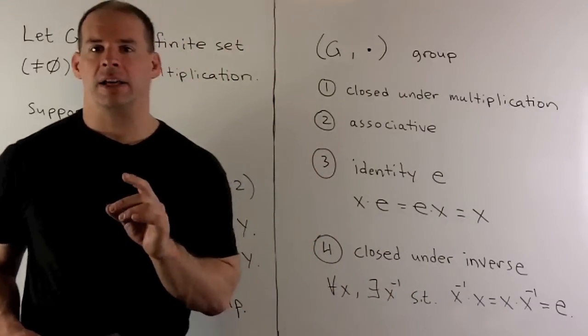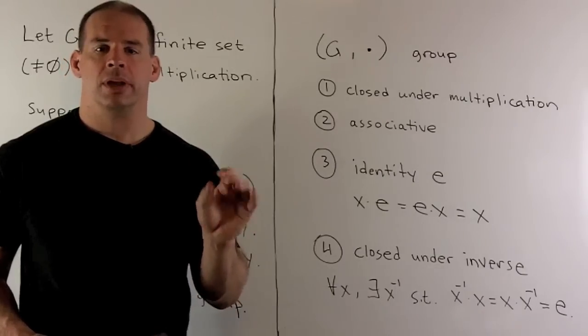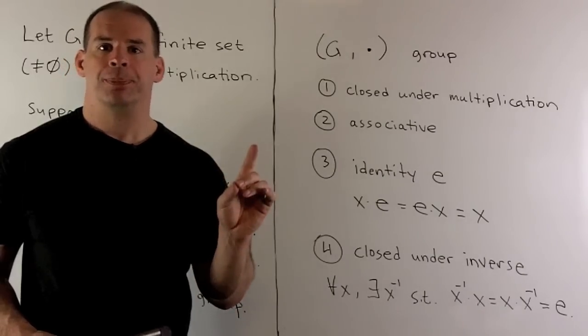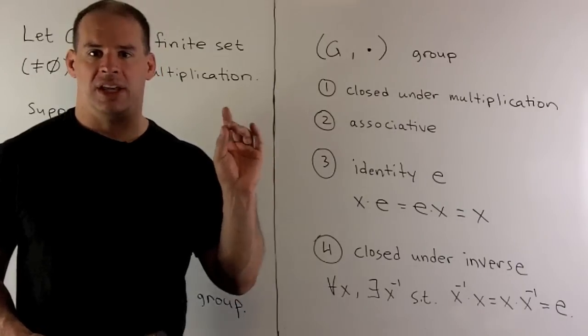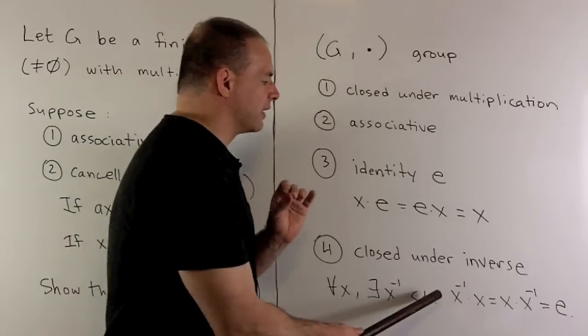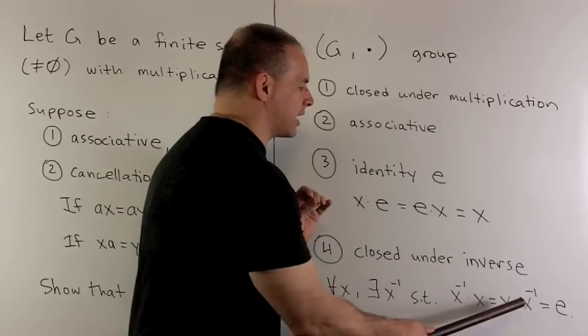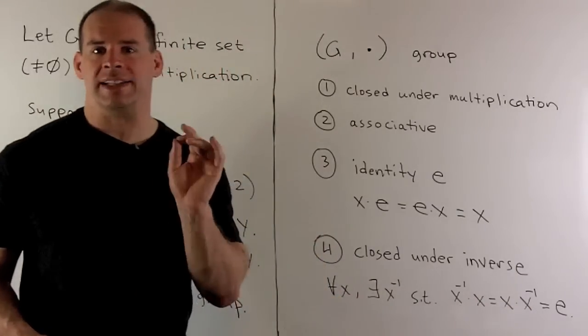And then finally, we want closure under inversion. So, for any X and G, there's going to be another element, X inverse, such that X inverse times X equals X times X inverse is equal to our identity element E.